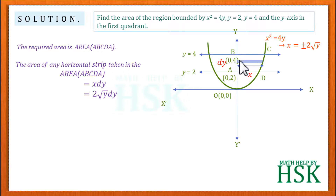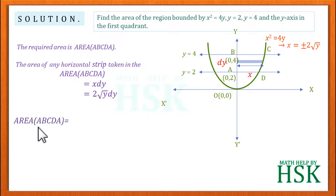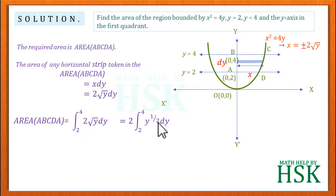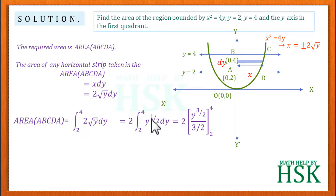To find the total area, I integrate all these strips over the region. The required area ABCDA equals the integration of 2√y·dy from the limits 2 to 4. Writing √y as y^(1/2), on integrating y^(1/2) we get y^(3/2) divided by (3/2).